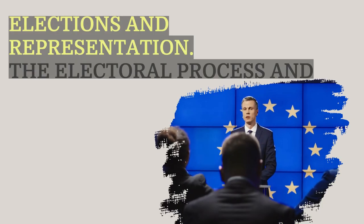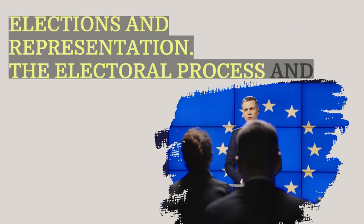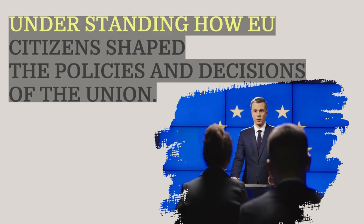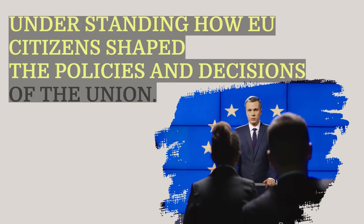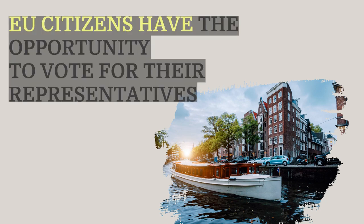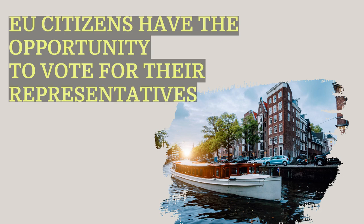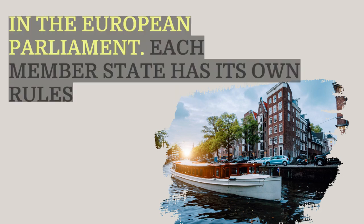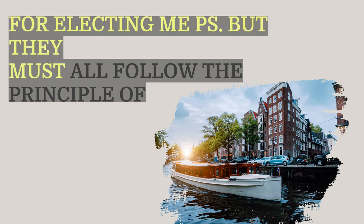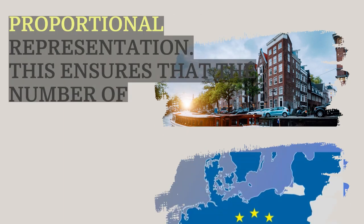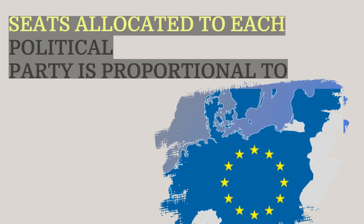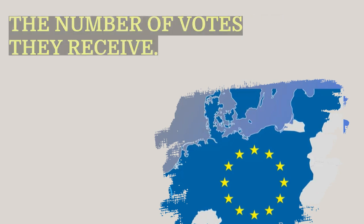The electoral process and representation in the European Parliament are essential for understanding how EU citizens shape the policies and decisions of the Union. Every five years, EU citizens have the opportunity to vote for their representatives in the European Parliament. Each member state has its own rules for electing MEPs, but they must all follow the principle of proportional representation, ensuring that the number of seats allocated to each political party is proportional to the number of votes they receive.